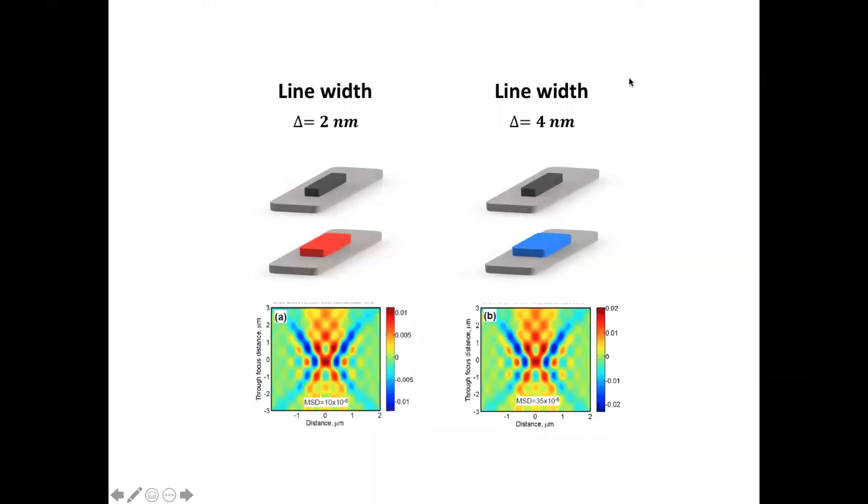Now, let's see the previous slide again. When we get the MSD value, differences of 2nm and 4nm in the line width of an isolated line produce MSD values of 10μ and 35μ units, respectively. In this example, the increment of MSD value has a direct relationship to the magnitude of the dimensional differences.